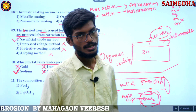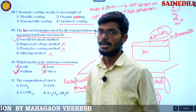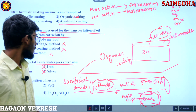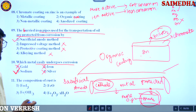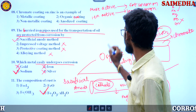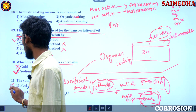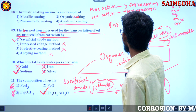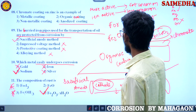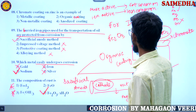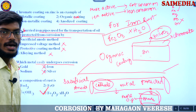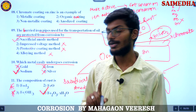Sodium is more active, so it undergoes fast corrosion compared to iron. That is clear. Now the next question: what is the composition of rust? It is Fe2O3·xH2O — this is the formula for iron rust, very important.